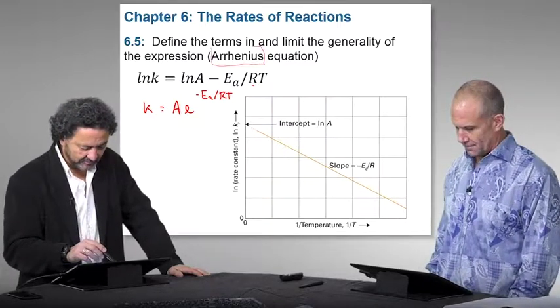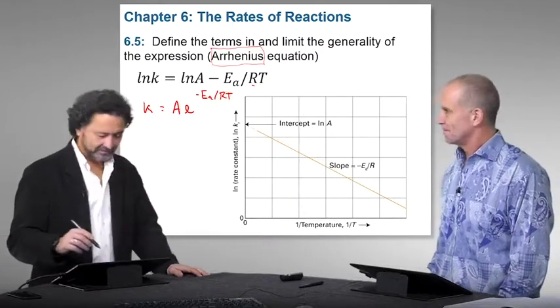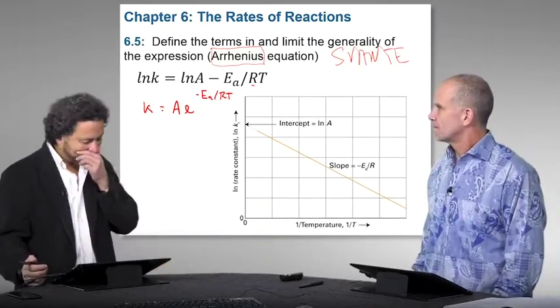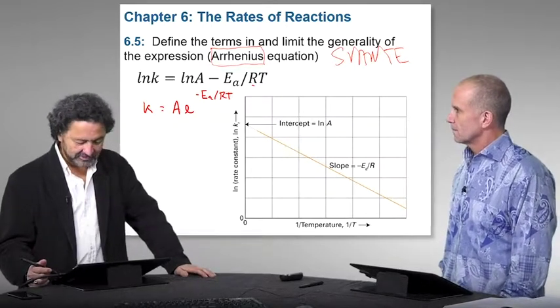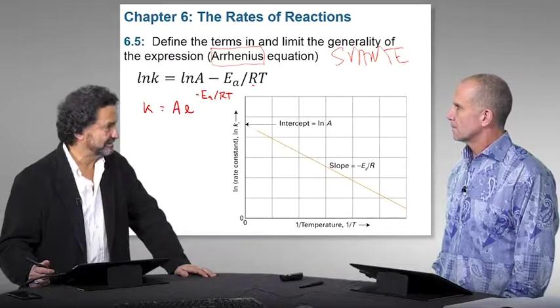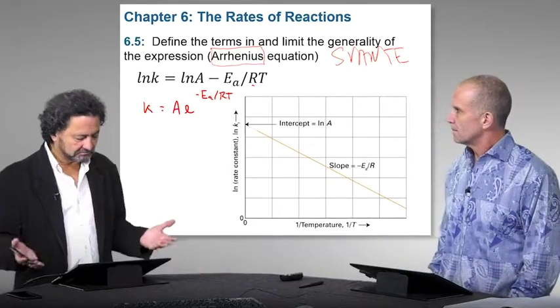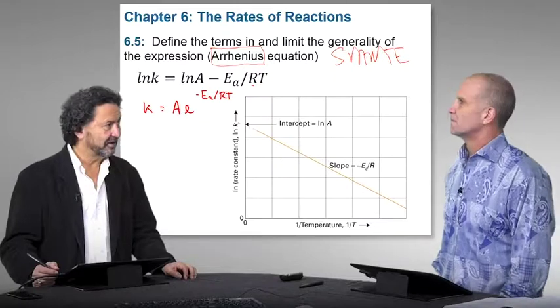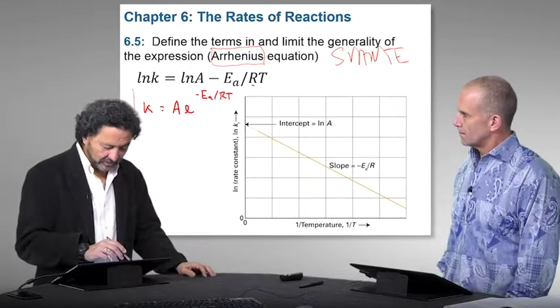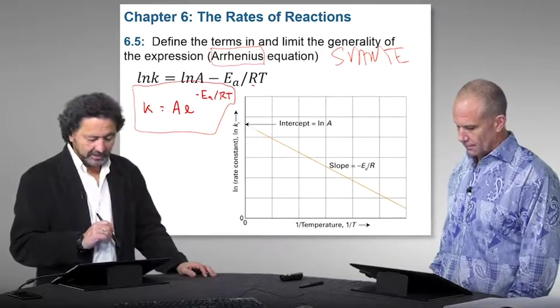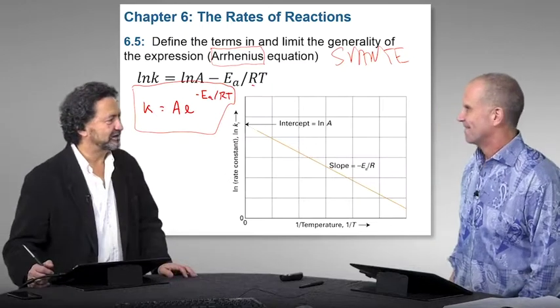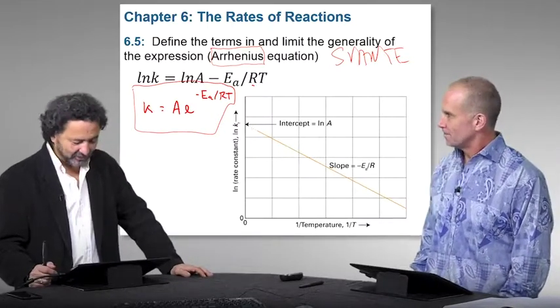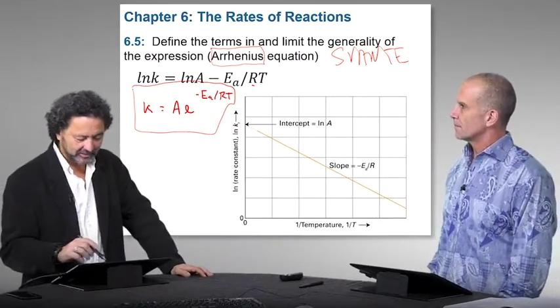Since I did my PhD in Sweden, Uppsala University, this gentleman here was a Swedish physical chemist by the name of Svante Arrhenius. And the amazing thing about this equation is that actually he came up with this idea almost by accident, examining how rate constant depends on temperature. But he didn't really have a molecular model of this.